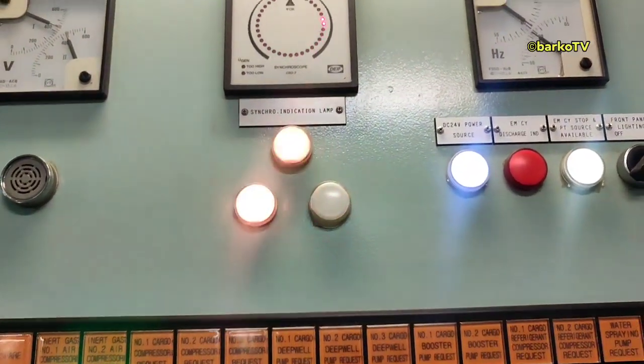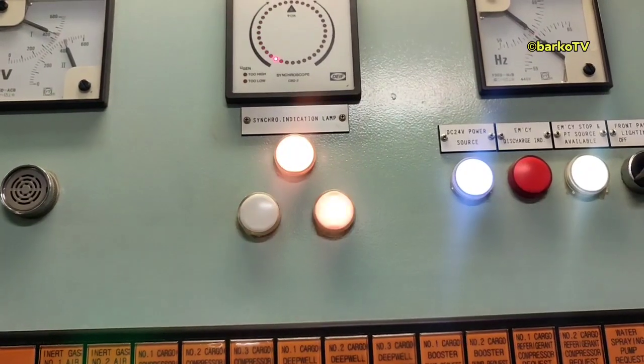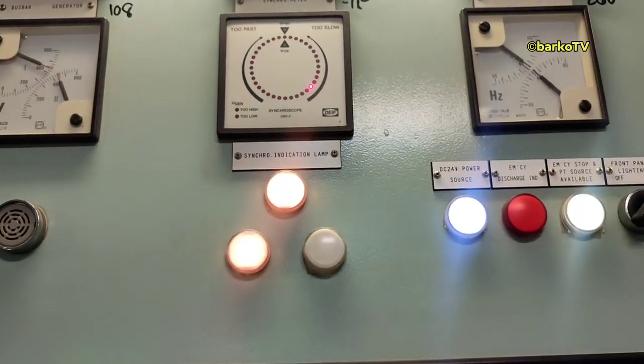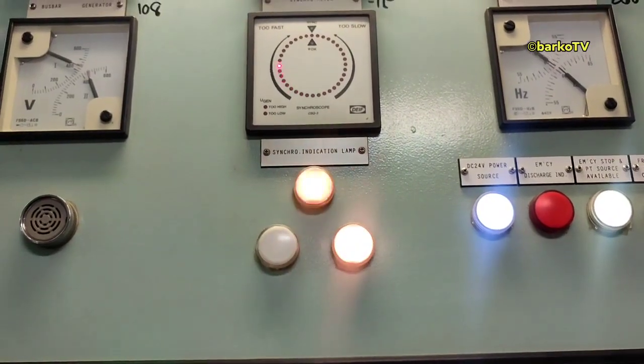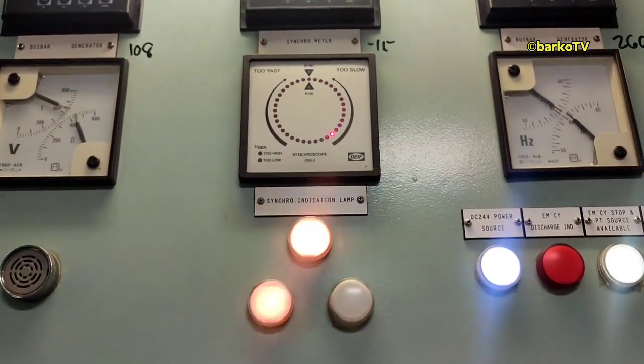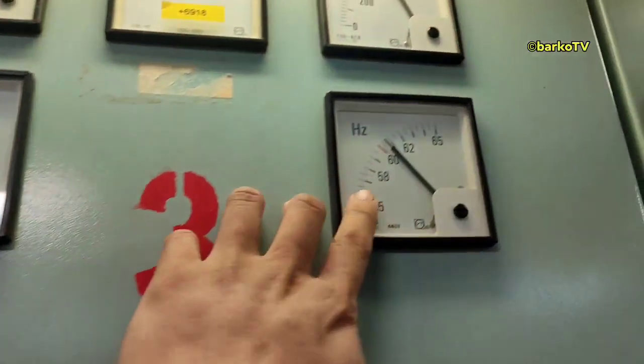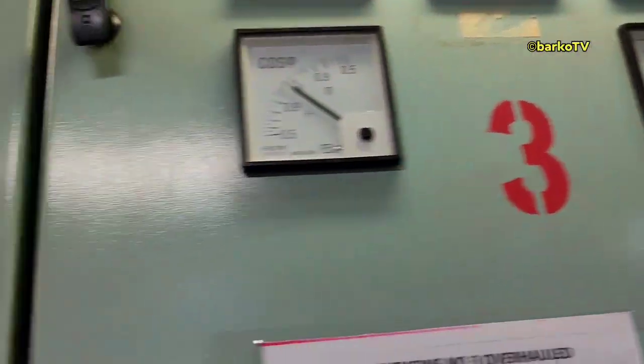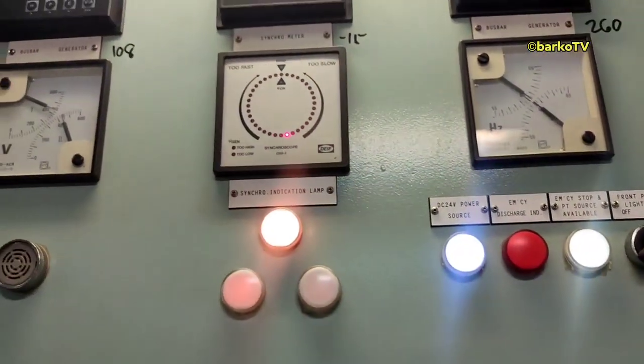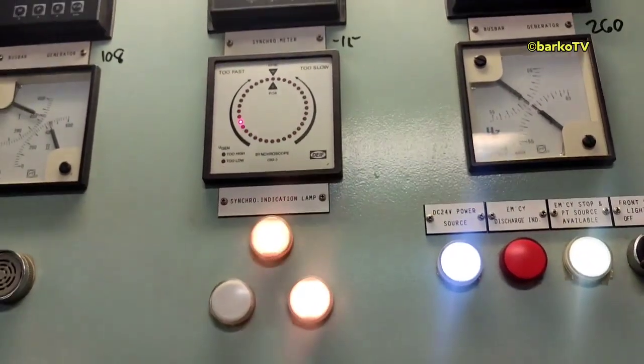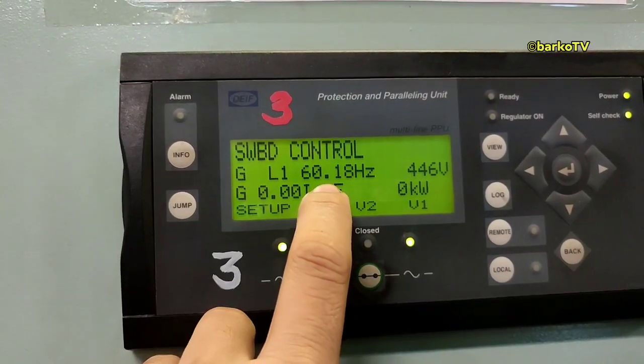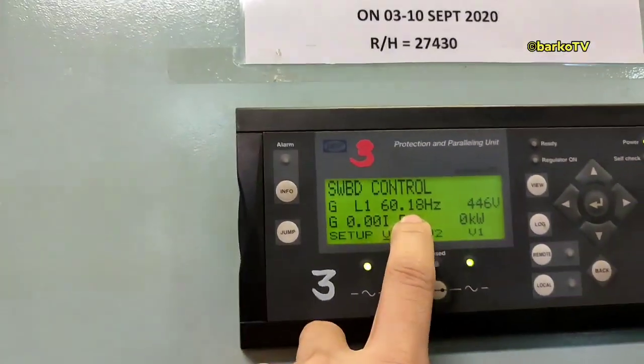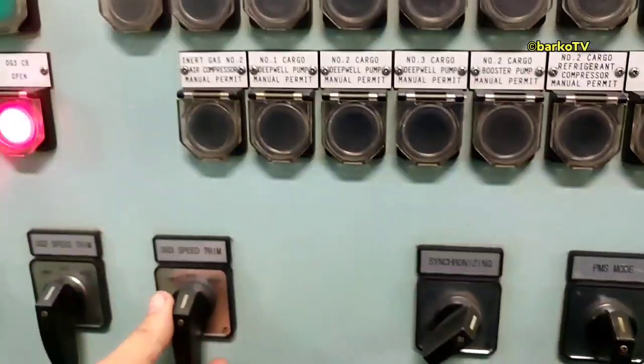Clockwise, and then the frequency is higher than 60. If the synchroscope indicating lights stop, it means that is exactly 60 hertz, like that.